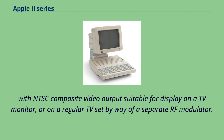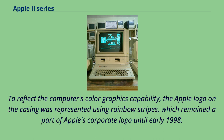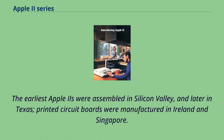The original retail price of the computer was US$1,298. To reflect the computer's color graphics capability, the Apple logo on the casing was represented using rainbow stripes, which remained part of Apple's corporate logo until early 1998. The earliest Apple IIs were assembled in Silicon Valley, and later in Texas; printed circuit boards were manufactured in Ireland and Singapore.